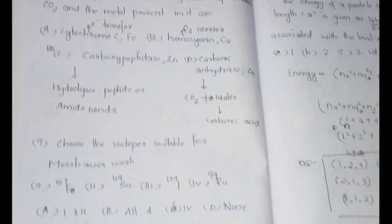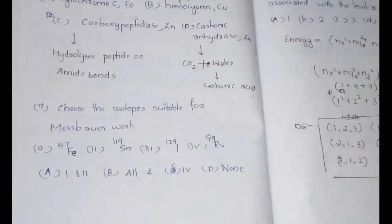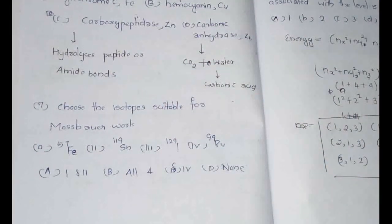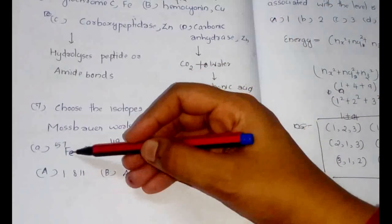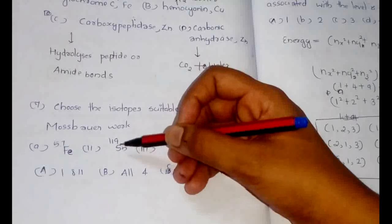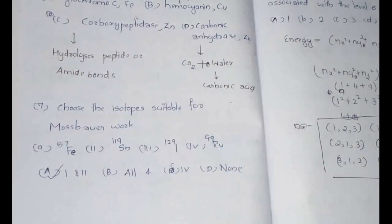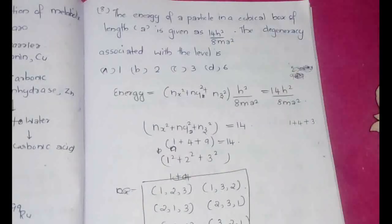Now the seventh question is: choose the isotope suitable for Mössbauer work. So in case of this, actually this is also a thing commonly known. The isotopes that we use are Fe-57 and tin-119. So 119Sn would be the answer, option A 119Sn would be the answer for this particular question.